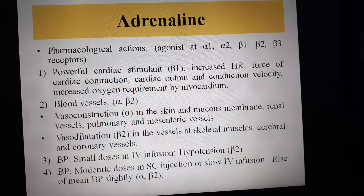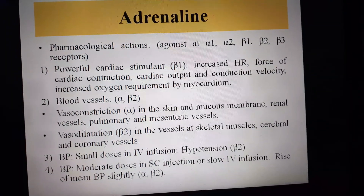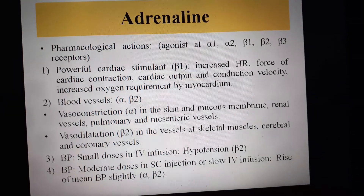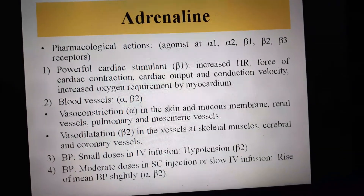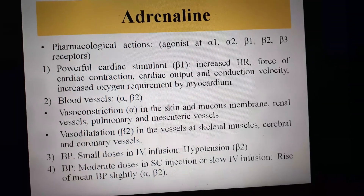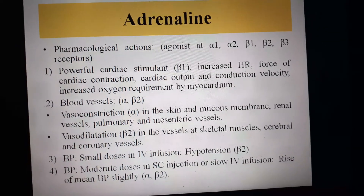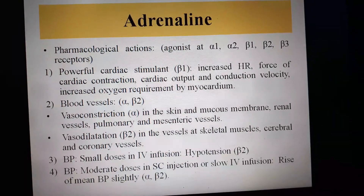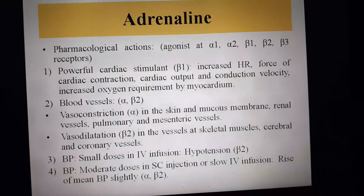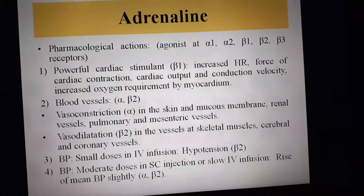If Adrenaline is given in moderate doses by subcutaneous injection or slow IV infusion, it causes a rise of systolic blood pressure and a decrease of diastolic blood pressure, resulting in a slight increase in mean blood pressure. The rise in systolic BP is due to alpha and beta-1 action, while the decrease in diastolic BP is due to beta-2 action.